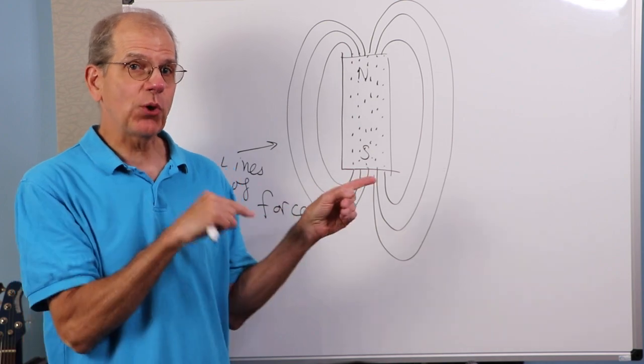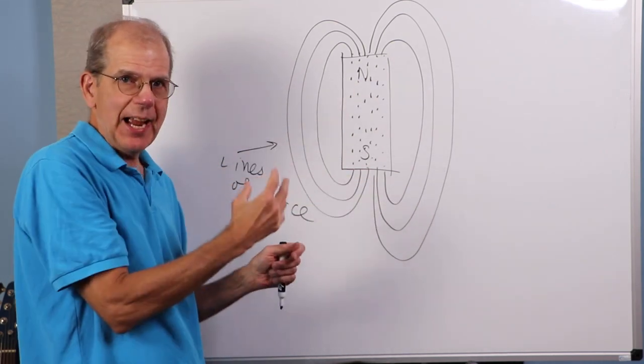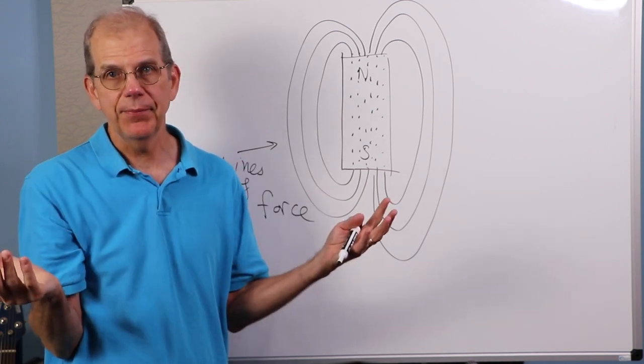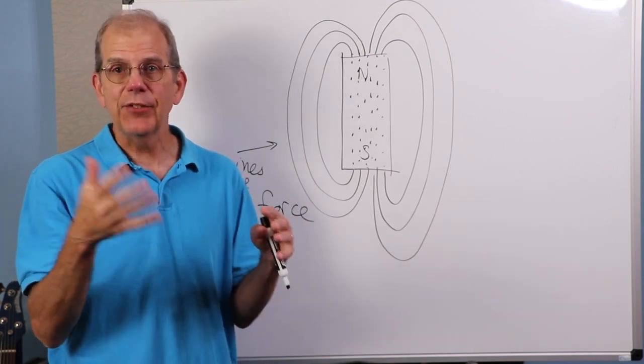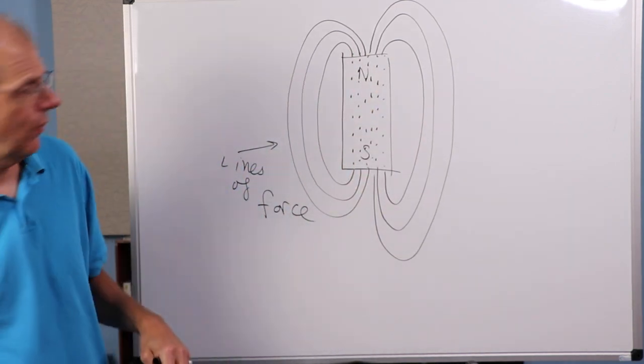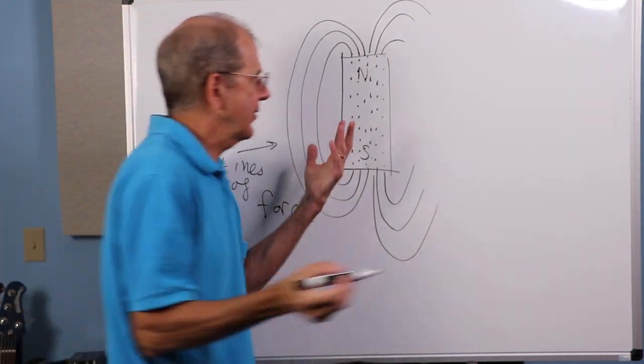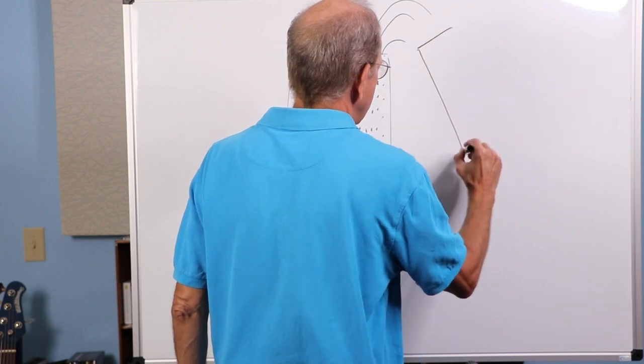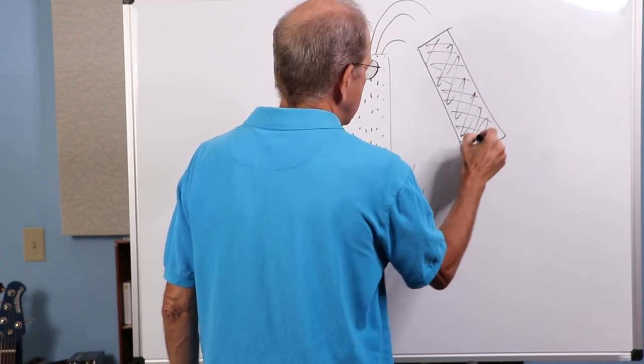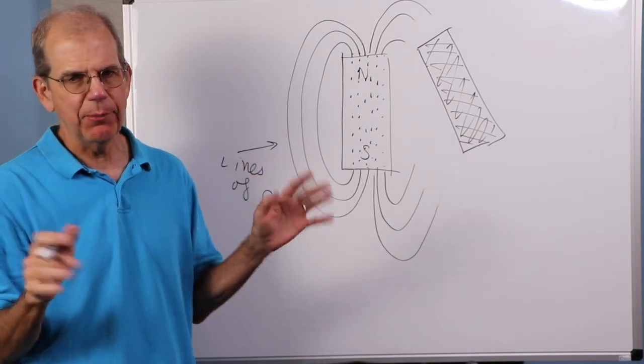Now, you can distort the lines of force if you have some material where the lines of force are easier to establish than in the air. And the term we use for this, the quantity we use for this, is something called permeability. If I have a high permeability material like, let's say, iron, it's very easy to establish magnetic lines of force in it. And we can, therefore, distort the magnetic field.